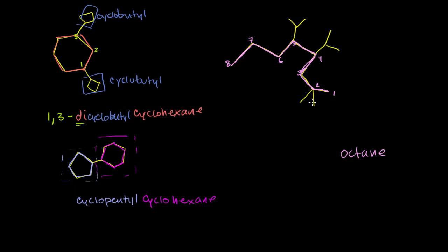Now we just have to add the groups. This right here is just one carbon attached to the main chain, and this is another carbon attached to the main chain. So both of these are methyl groups — 'meth' is for one carbon. These are the only methyl groups; the two up here aren't methyl groups. So we have two methyl groups on our entire chain, so it's going to be dimethyl. Both of the methyl groups are at the two position, so this is going to be 2,2-dimethyl.